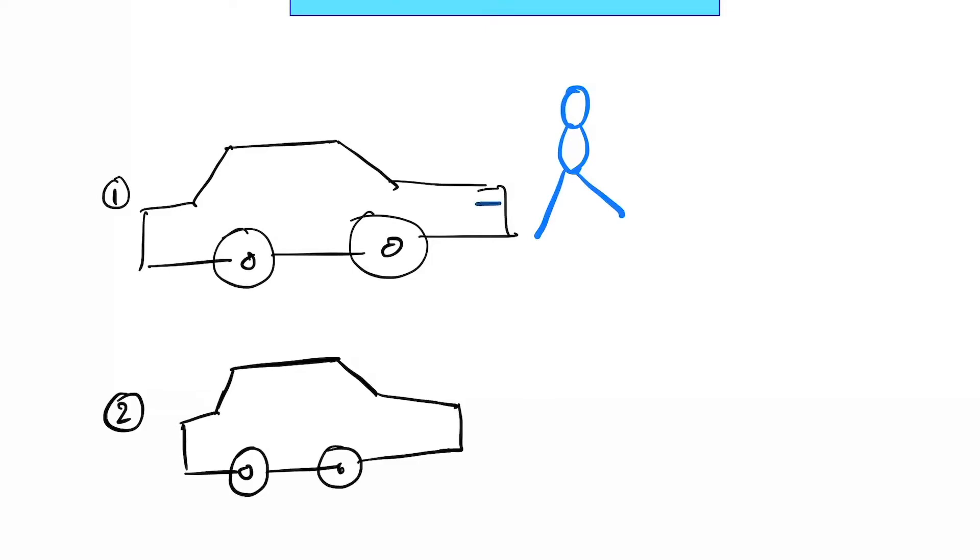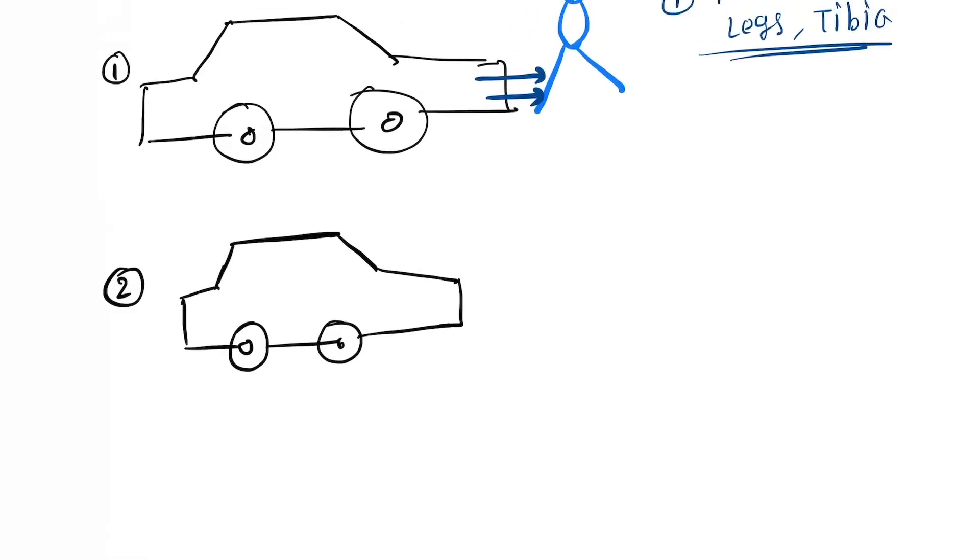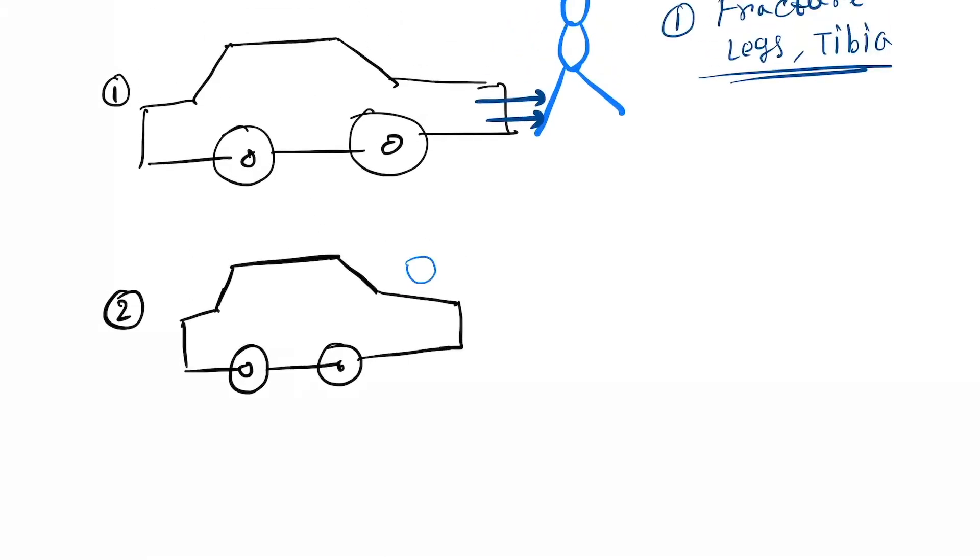First, the vehicle will go and hit the legs. So in the first impact, what will happen? A fracture can occur in the legs. It will cause fracture of the bone, the tibia. This is the first impact. Next, the person will fall down like this.